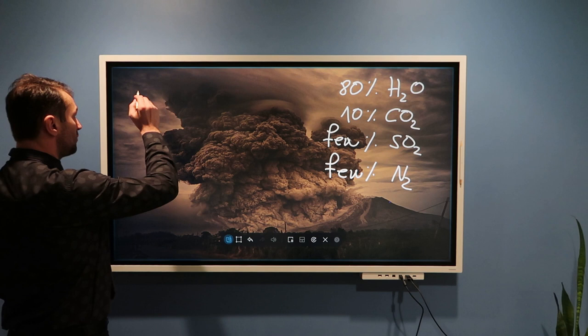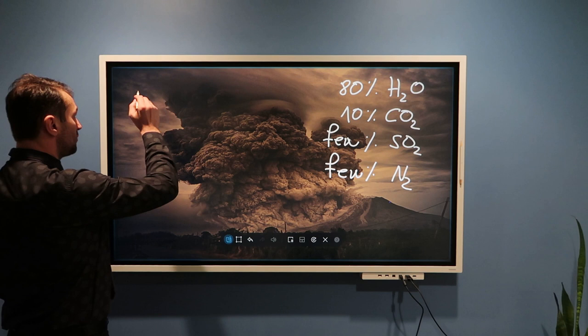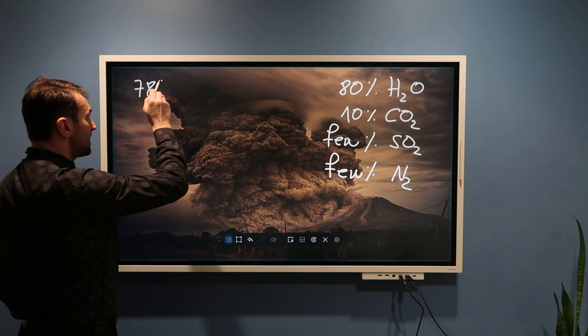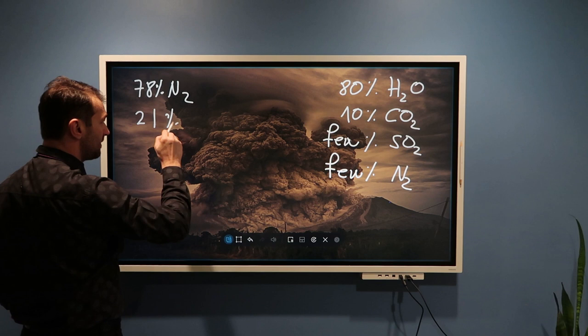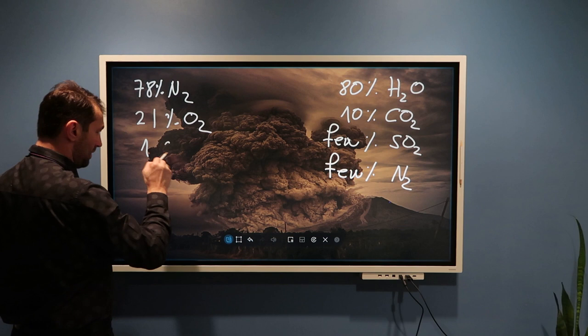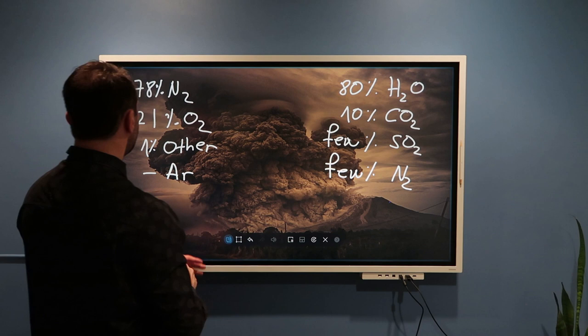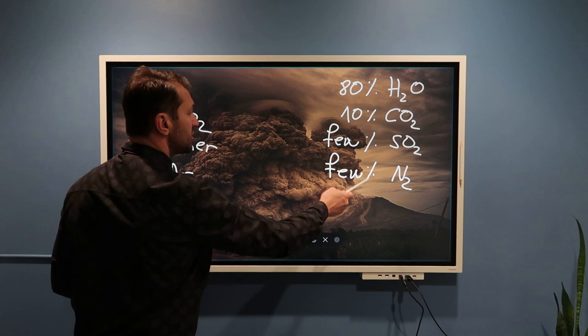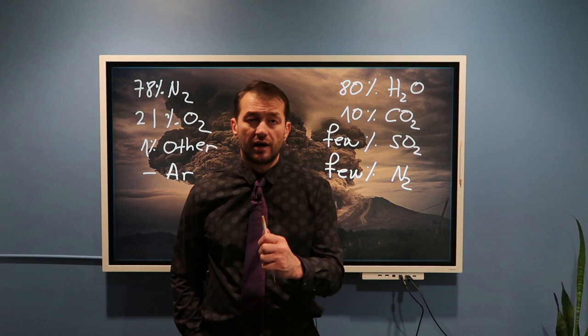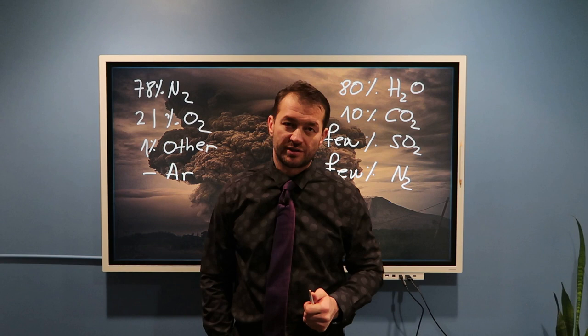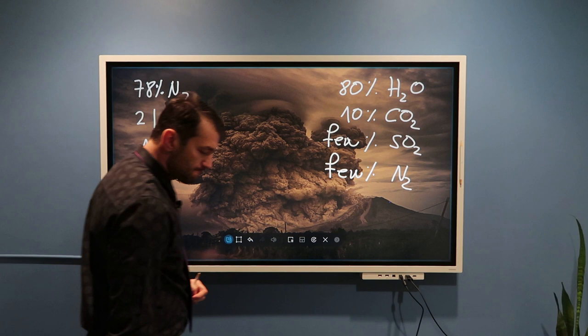The air that we breathe today is 78% nitrogen (N2), 21% oxygen (O2), and 1% other gases — typically argon. If you look at the right side of this figure and the left side, you can see they do not correspond. What volcanoes are releasing is not what we breathe today. And yet I claim the atmosphere was mostly formed through these volcanic eruptions and steam vents. So, how did we get from one to the other? That is what I will describe in the next few minutes.